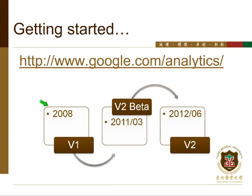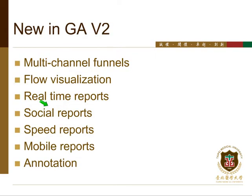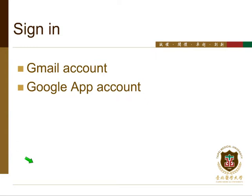What's new in Google Analytics version 2? They have multi-channel funnels — the funnels function existed in version 1 but has been improved. They also have a better flow visualization tool, real-time reports, social reports on social networks, speed reports, and because of mobile devices, they now separate mobile usage from PC usage. They also have annotation functions.